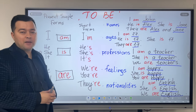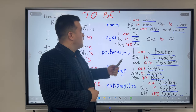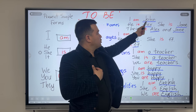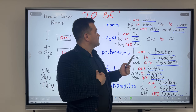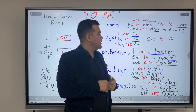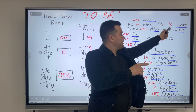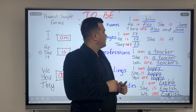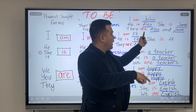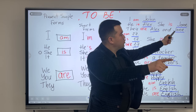Let's make some sentences with names. I am John. He is Alex. She is Jane. They are Alex and Jane.